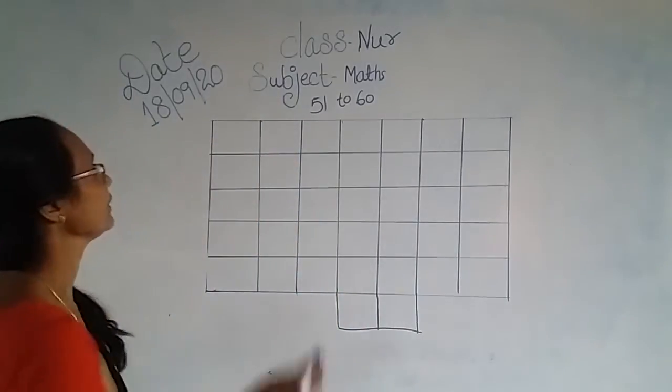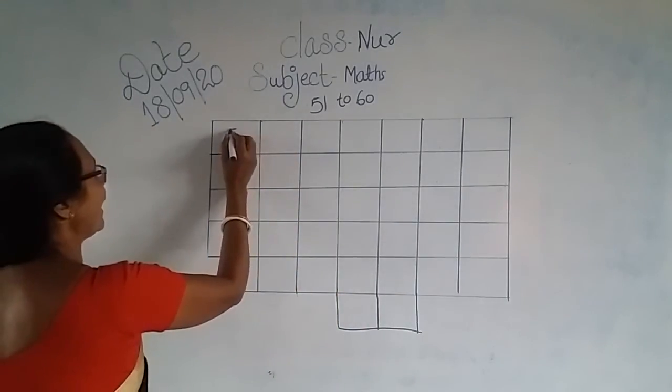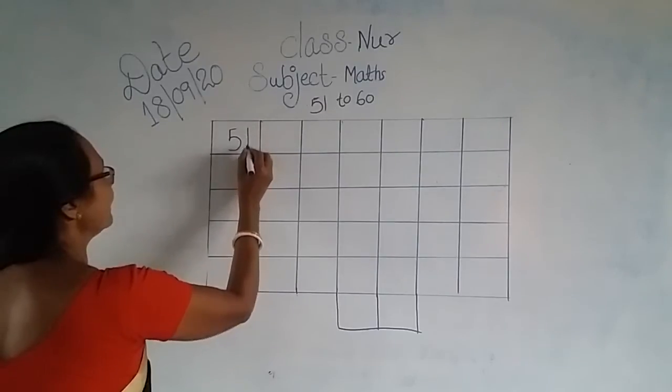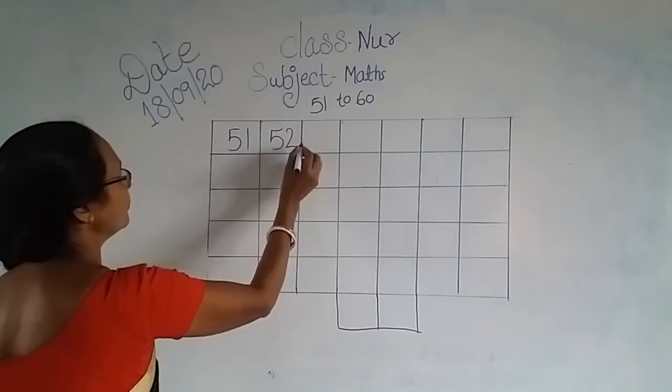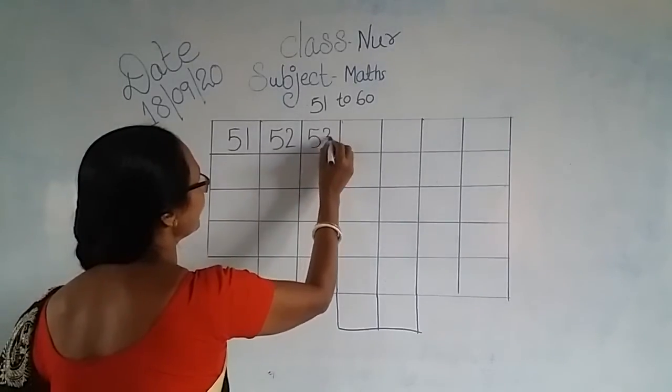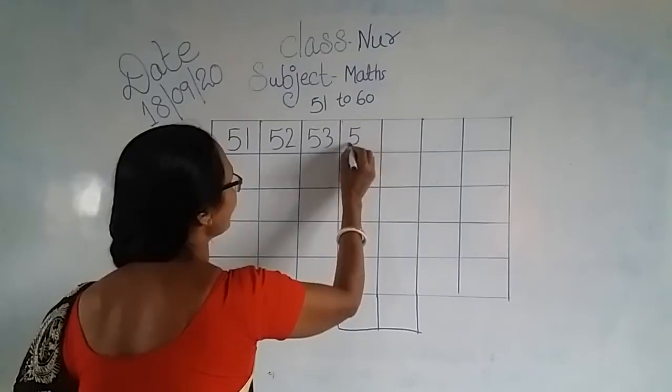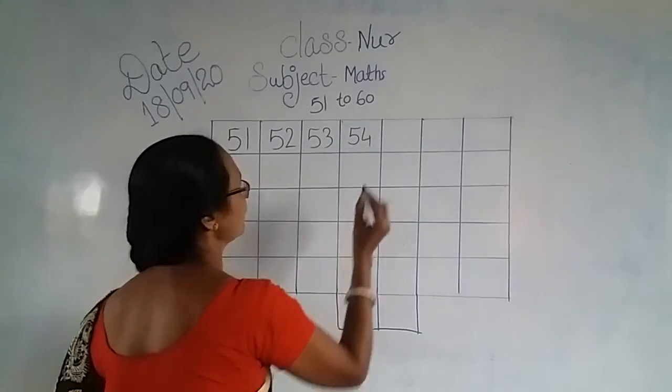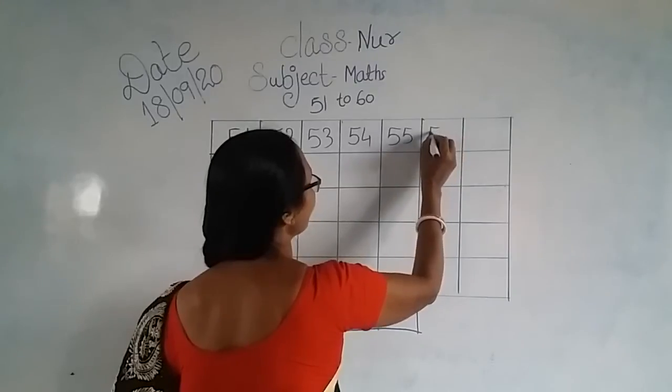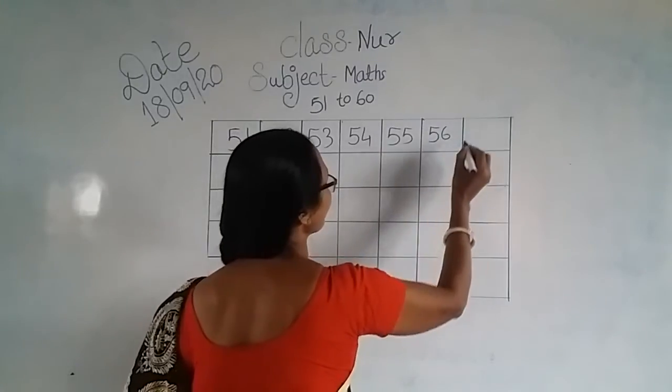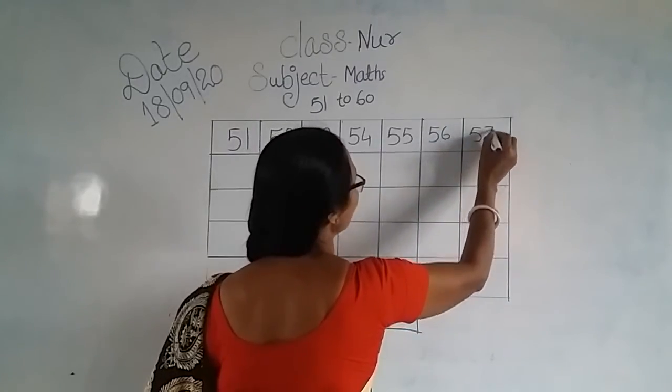I will take 51 to 60. 5-1 is 51, 5-2 is 52, 5-3 is 53, 5-4 is 54, 5-5 is 55, 5-6 is 56, 5-7 is 57.